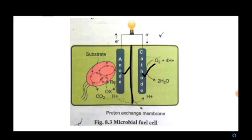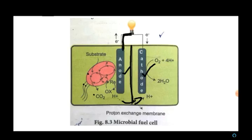On the anode side, organic substances (the substrate) are kept and microbes are added. The bacteria digest the organic substances on the anode side by oxidation, thereby generating protons. These protons pass through the proton exchange membrane into the cathode side. The electrons from the anode pass into the external circuit, thus producing electric current.